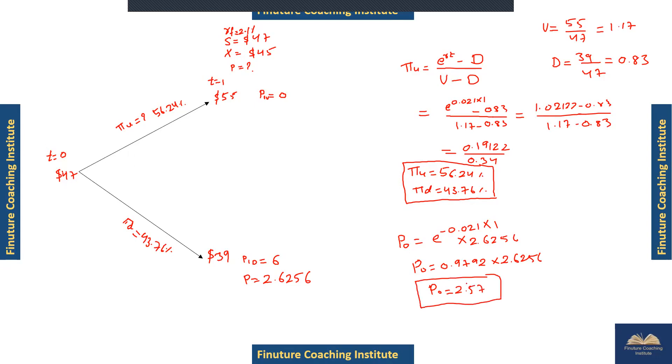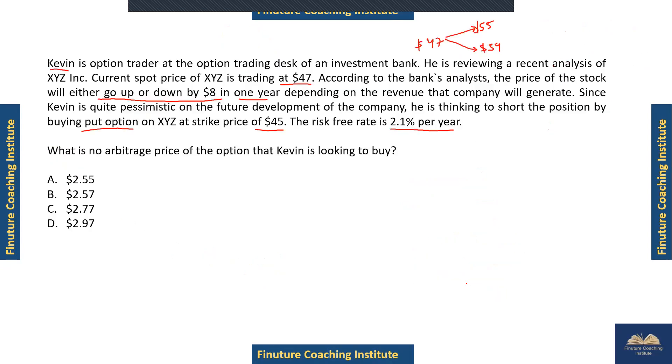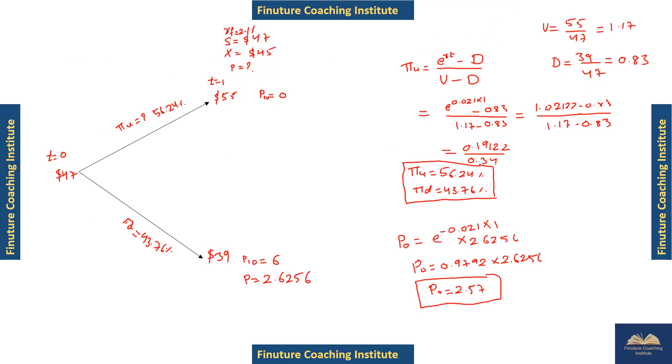This is the price Kevin should pay, so option B is correct. Hope you liked the video. If yes, please share with your friends, because if you see the solution in the books it's very confusing. This is a very simple way to calculate the price of the put option at year zero. Thank you, stay connected.